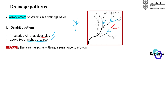What is the reason for having a dendritic pattern? The river flows over an area that has rocks with equal resistance to erosion. The underlying area — the area where the river is flowing — has rocks with equal resistance to erosion. Equal resistance means it is equally hard to wash away all the rocks.